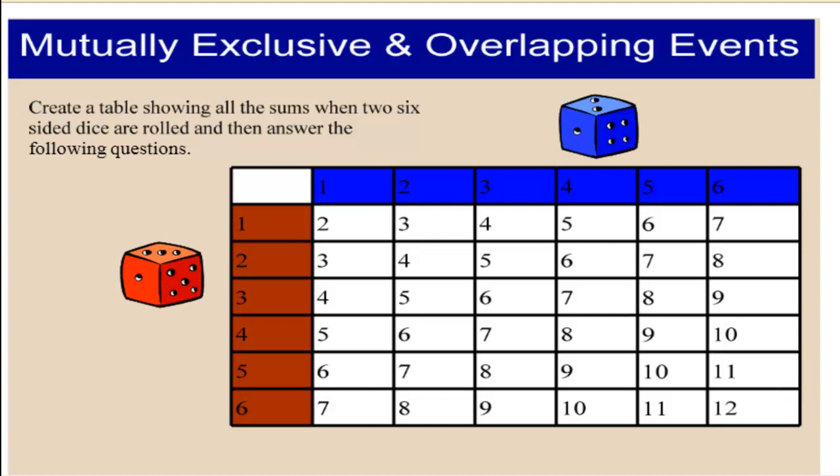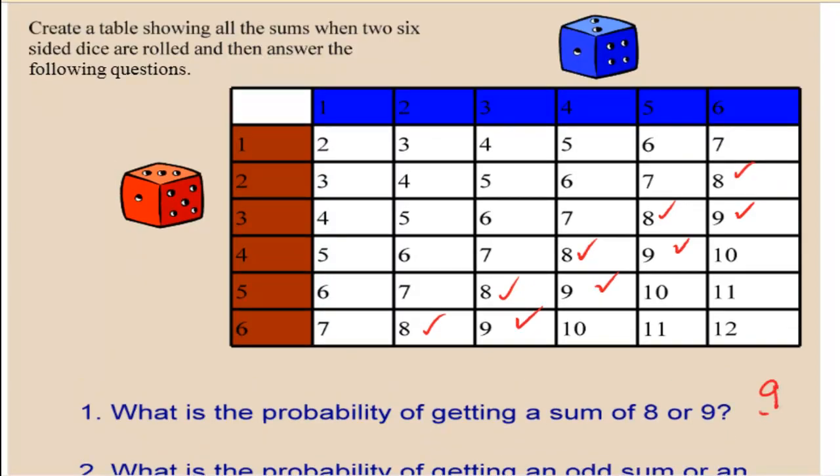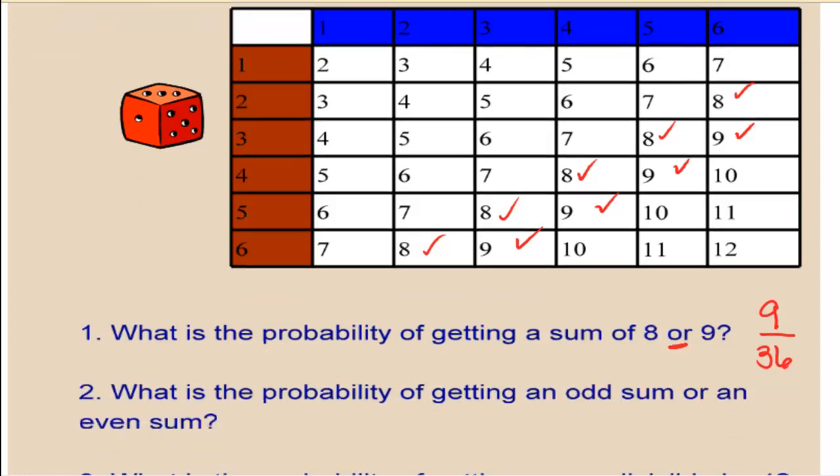Here we have a table that shows all the sums when two six-sided dice are rolled. Let's use this to answer some questions about overlapping and mutually exclusive events. The first question asks, what is the probability of getting a sum of 8 or 9? We have 1, 2, 3, 4, 5, 6, 7, 8, 9 outcomes. So we have 9. Let's notice this is an or. 9 out of how many total? 6 times 6, 36. I'm not going to simplify my fractions, because if we're adding and subtracting fractions, we need to have common denominators.